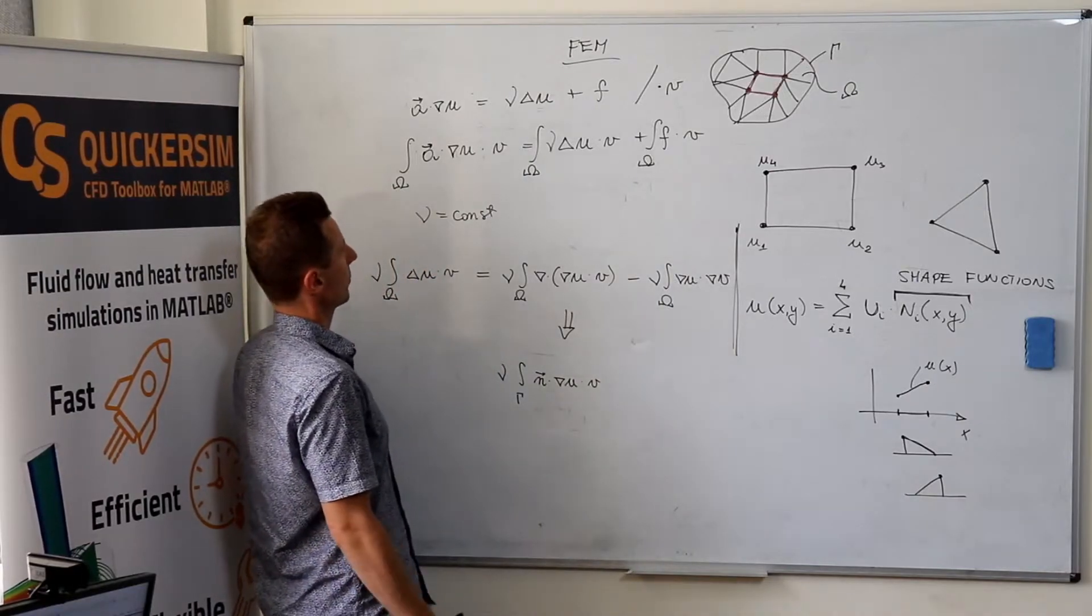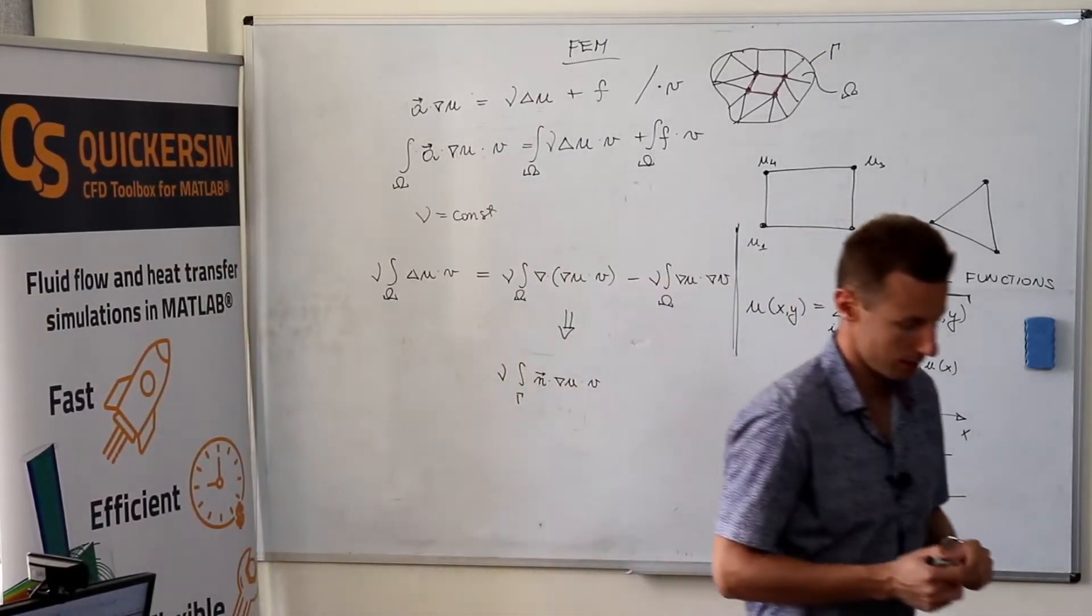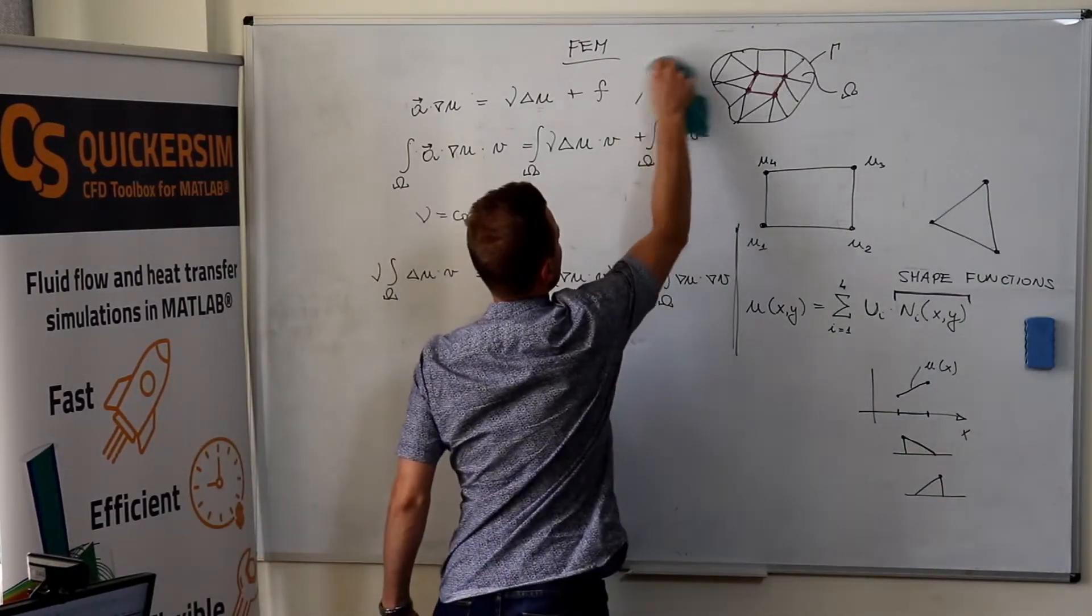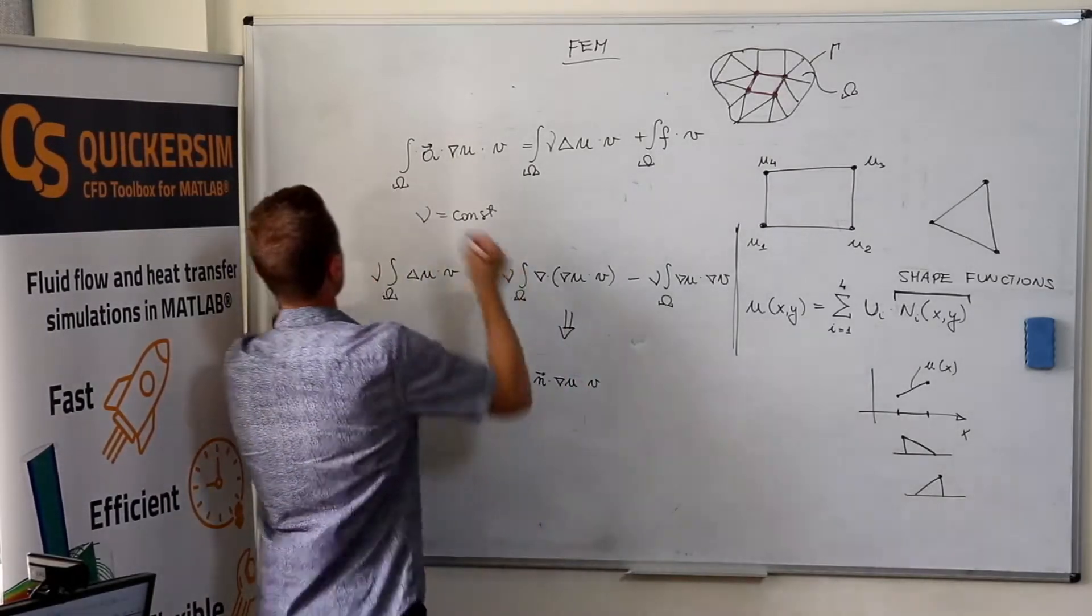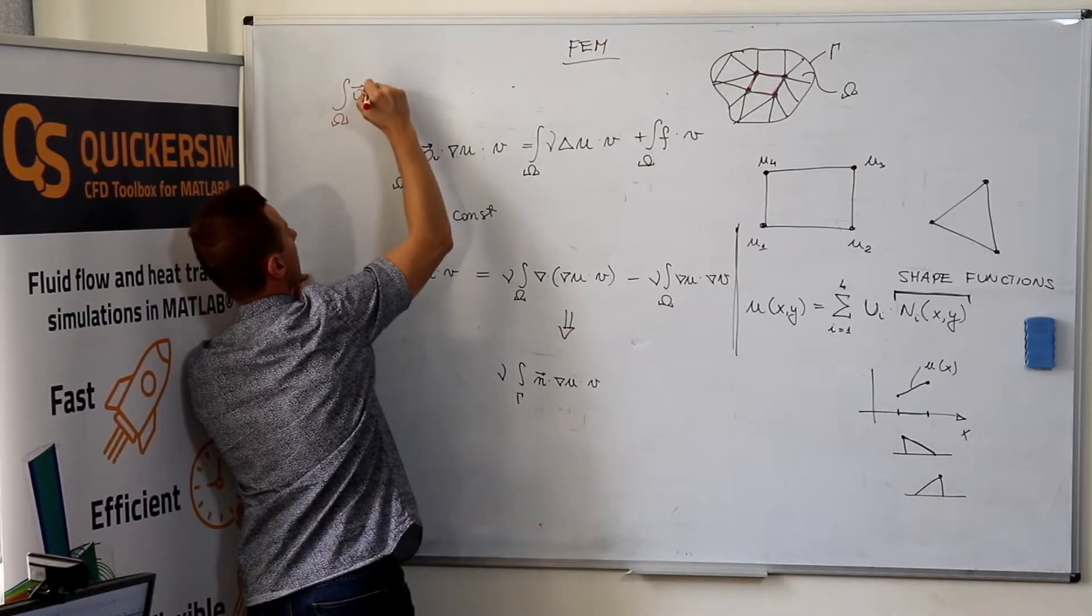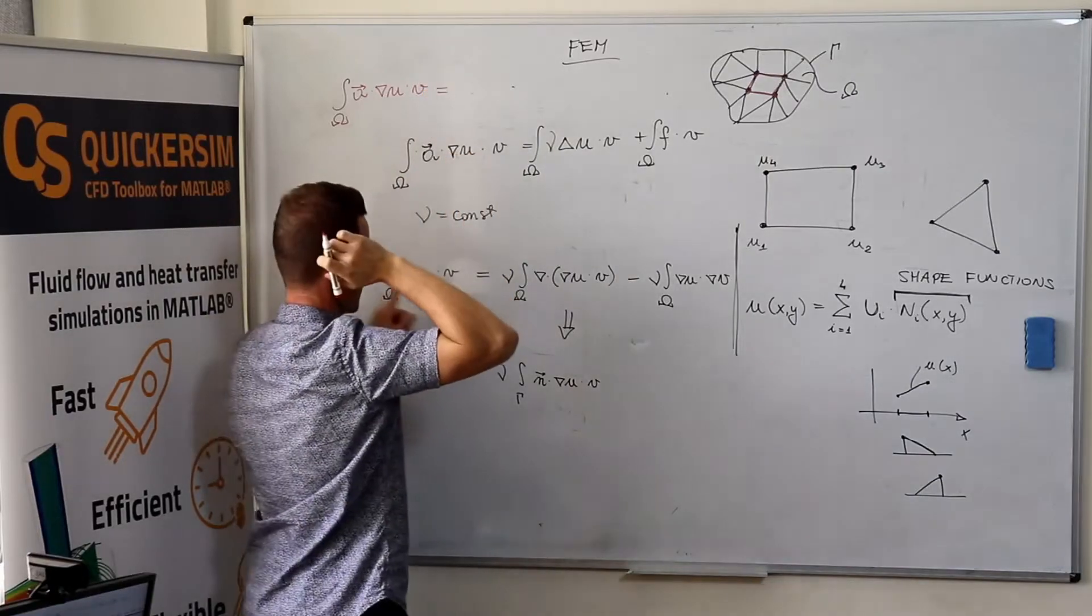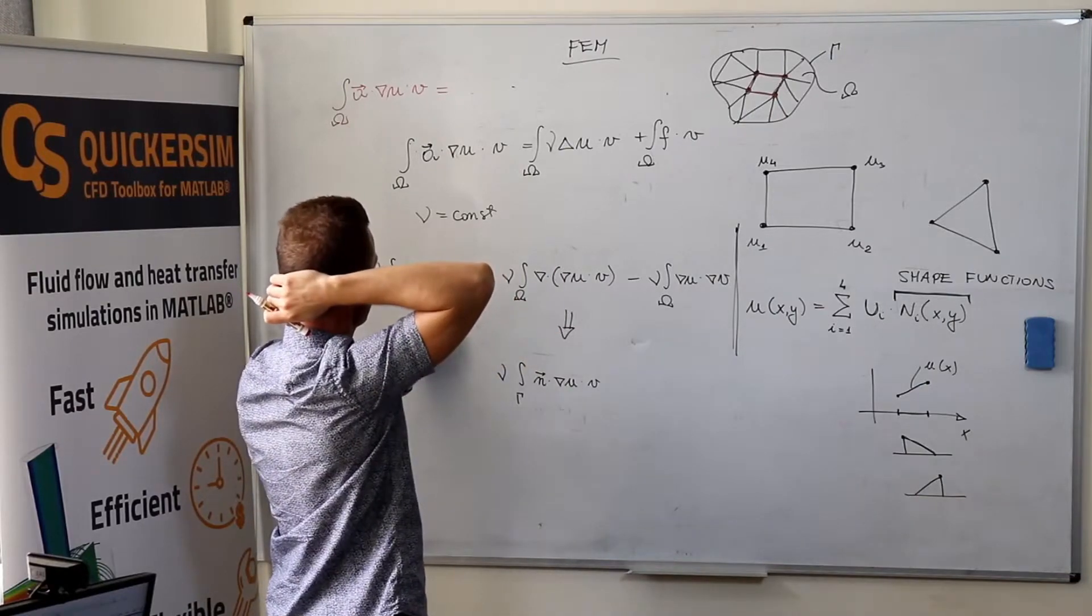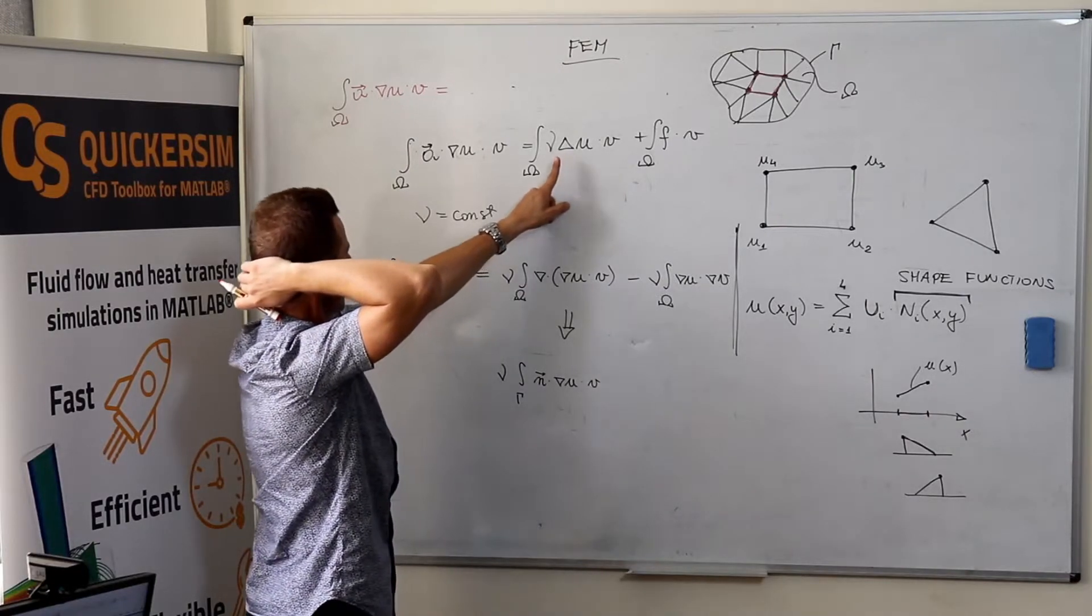So our weak formulation would be, maybe let me write it on the top. We've got the integral a times gradient of u times v equals that, but okay, plus sign on the right-hand side.